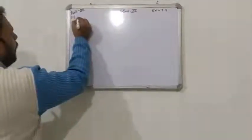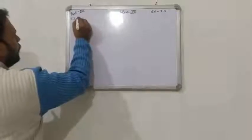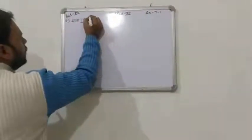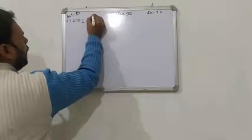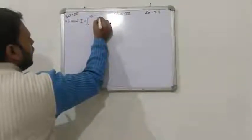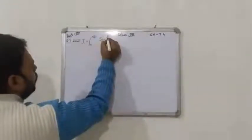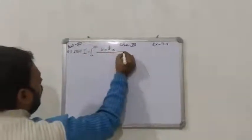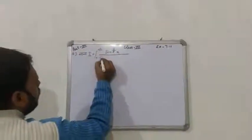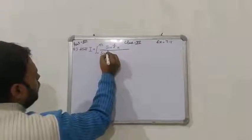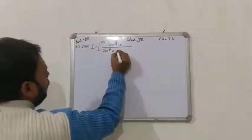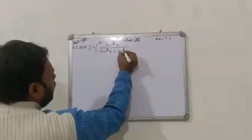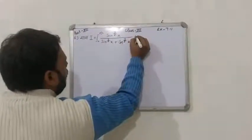Q3: माना I बराबर, limit 0 से π/2, sin^(3/2)x upon sin^(3/2)x plus cos^(3/2)x, dx.